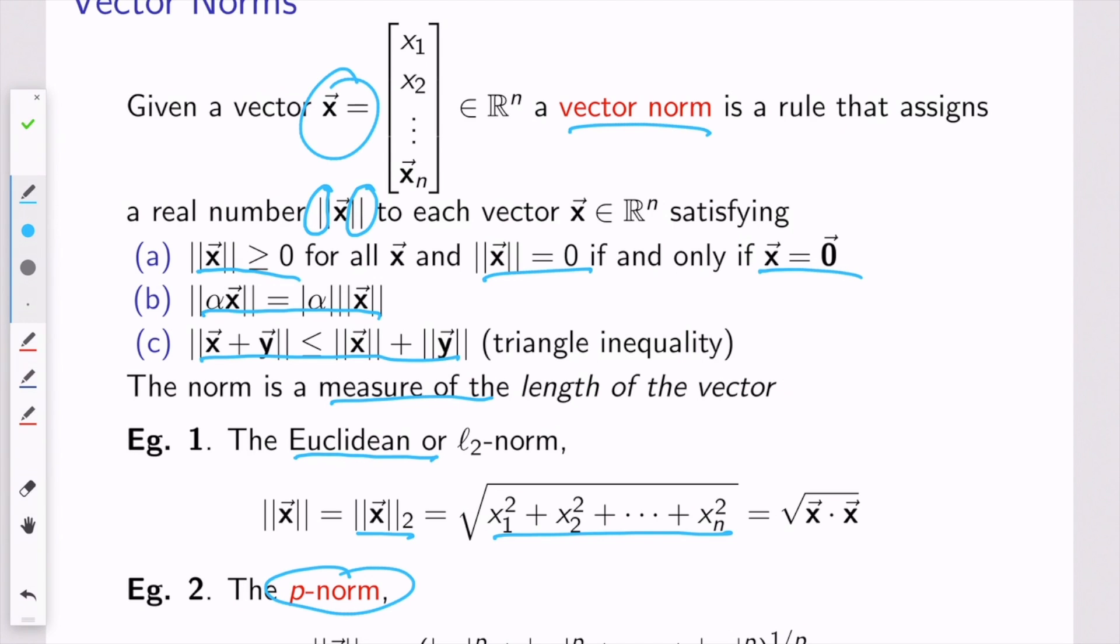This is an example, more generally, of something called the p-norm. The p-norm means that you take each element of the vector, take the absolute value, raise it to the p-power, add them all together, and then take the answer and raise it to the 1 over p-power, or that's taking the p-th root. You can see that the Euclidean norm is just the p-norm with p equals 2.